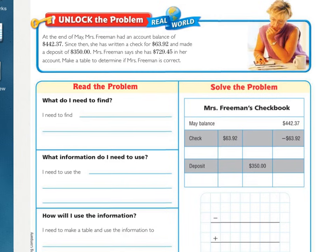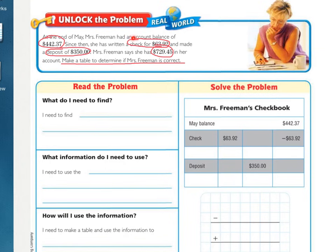We need to underline what you are being asked to find and circle the important numbers. Press pause and do so. You should have underlined the last sentence — make a table to determine if Mrs. Freeman is correct. The important numbers are $442.37, which is what she started with. I also circled the word 'check' so that I knew I would be subtracting $63.92. And then 'deposit' means adding $350. Her total of $729.45 is what you are checking.